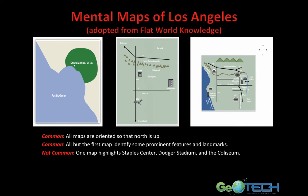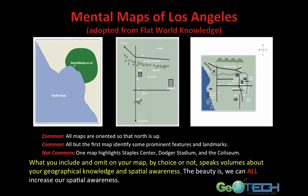If I gave a blank piece of paper to each of my kids and said draw me a map of Los Angeles, front and center would be Staples Center. The oldest kid might actually add the Ritz-Carlton Hotel, which is right next door to Staples Center. But if I said draw me downtown Los Angeles, draw the sidewalk with the stars, draw the Chinese Theater — they would have a really difficult time. They are prominently thinking of one certain feature. What one includes and what one omits on the map, by choice or not, speaks volumes about one's geographical knowledge and spatial awareness.